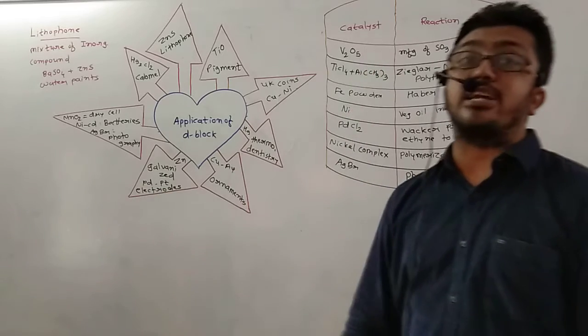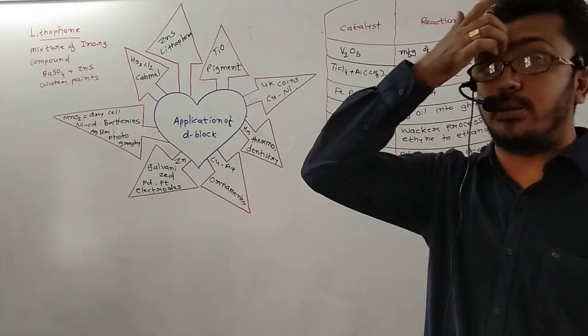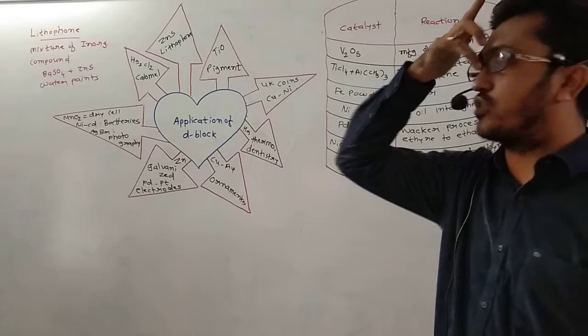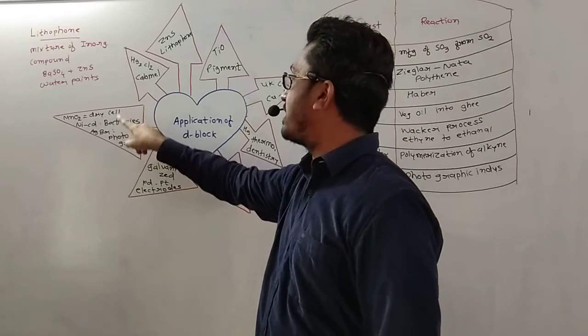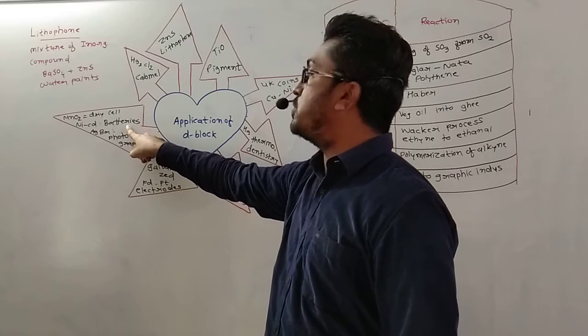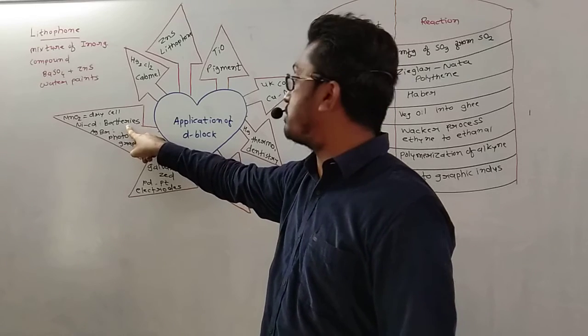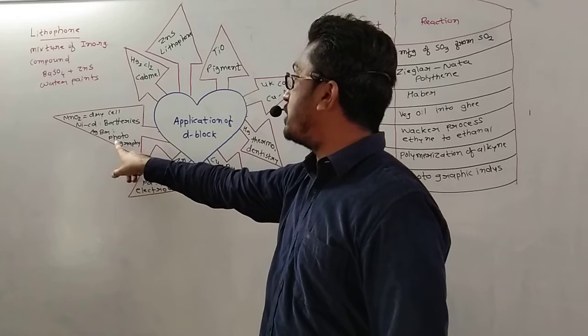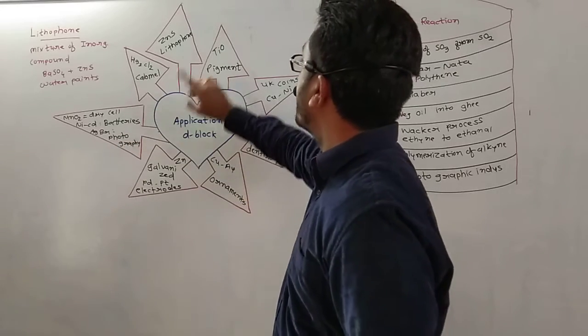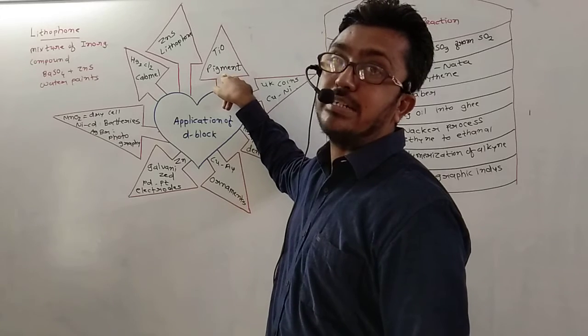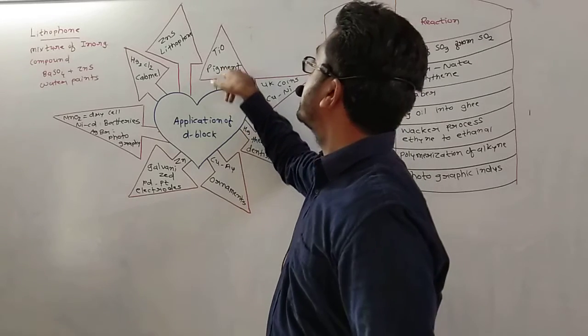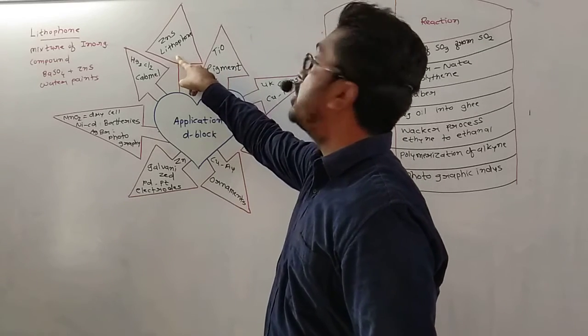Palladium and platinum are used for storing electrons. Then MnO2 is used in dry cells. Nickel-cadmium is used in batteries, these are rechargeable batteries. Silver bromide is used in photography. TiO2 is used in pigments. ZnS is used in lithopone.